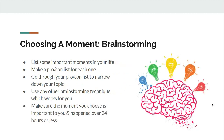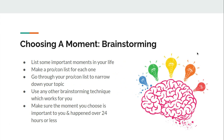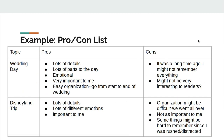When choosing a moment, one of the things we need to do is brainstorming. You can brainstorm in whatever way works for you, but in some way I'd like you to list some important moments in your life. You could make a pro-con list for each one and then narrow down your topic based on which one you think fits the best. Make sure that whichever moment you choose is really important to you so you'll have lots to say about it, and remember it needs to have happened over 24 hours or less.